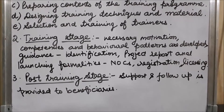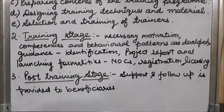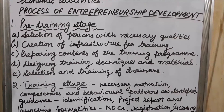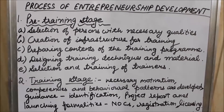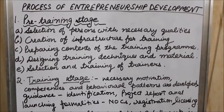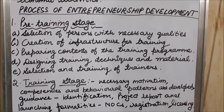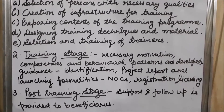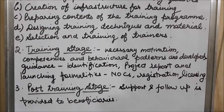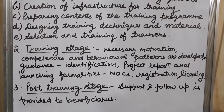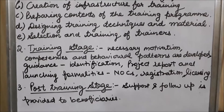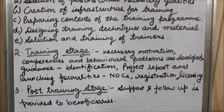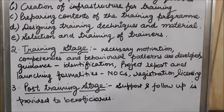So the process of entrepreneurship development is divided into three categories. In the pre-training stage, everything about the training is prepared — their classroom, their machines, and even their trainers are trained. In the training stage, they are given complete training — from their behavior to licensing of the business organization. In the post-training stage, they are given regular follow-up so that any shortcoming can be removed. I hope today's topic is clear to all. If you have any doubt, discuss with me. Thank you, students.